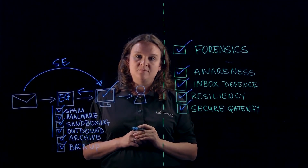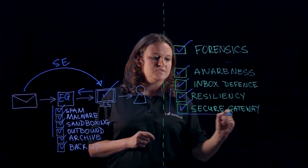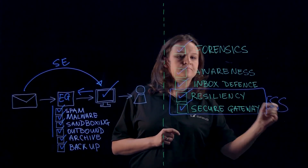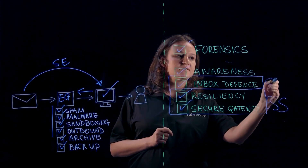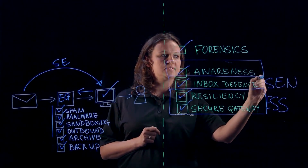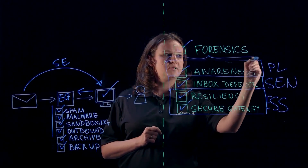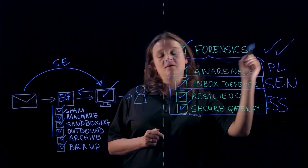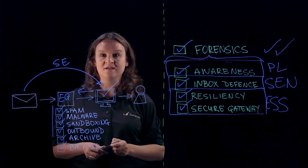Barracuda Total Email Protection reflects this multilayered approach. Secure gateway and resiliency are delivered through our essential solutions. Inbox defense is delivered through Sentinel and its AI engine. You can train your staff using Phishline. All of this is supported by automated forensics and incident response. This is what total email protection looks like.